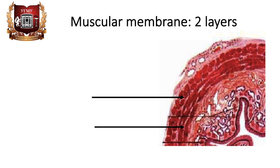The cervical and thoracic parts of the esophagus are covered externally with an adventitia sheath. Its loose connection with the vertebrae contributes to the displacement of the esophagus during the passage of food. The abdominal part of the esophagus is covered with a serous membrane, the peritoneum.